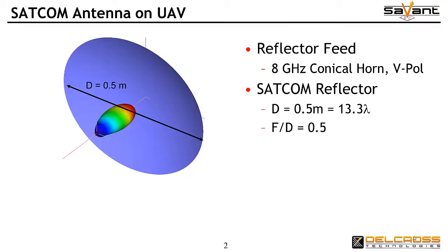We start with the design of the antenna itself. A parabolic reflector antenna model is used with a diameter of a half a meter, which is 13.3 electrical wavelengths at the operating frequency of 8 GHz. The focal length of the parabola is 0.25 meters, and an 8 GHz conical horn antenna model is placed at the parabola's focal point.